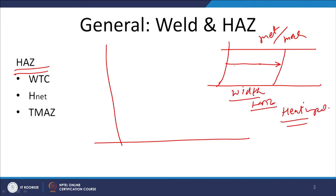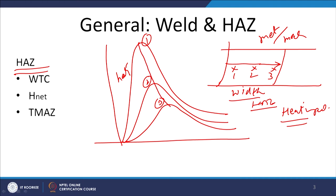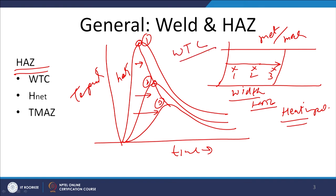If we take three different locations 1, 2, 3 in the HAZ, then each location will show a different weld thermal cycle, meaning different peak temperatures and different cooling rates. For location 0.1, 0.2, and 0.3: we see that peak temperature is decreasing and it is taking longer time to reach the peak temperature — that is the shift towards the right. The time scale and temperature are shown, and this is what is typically called the weld thermal cycle. The weld thermal cycle to a great extent affects the HAZ characteristics — which kind of transformation in the HAZ will be taking place.